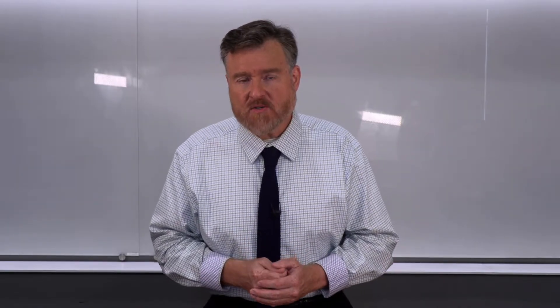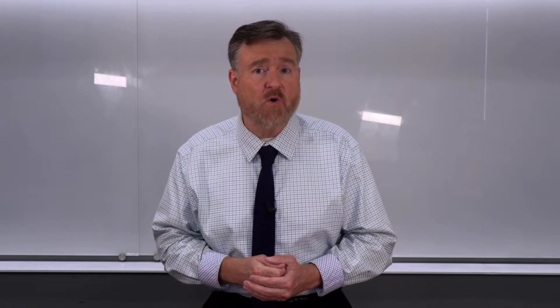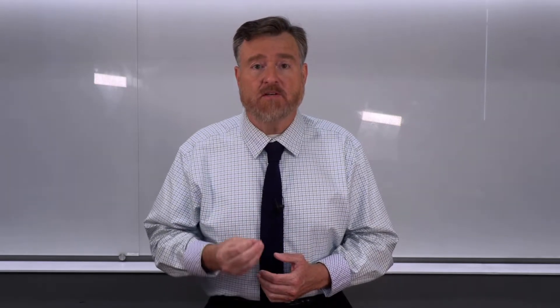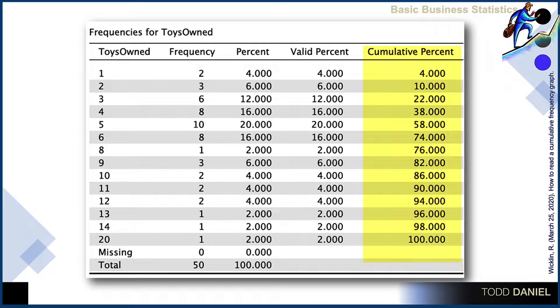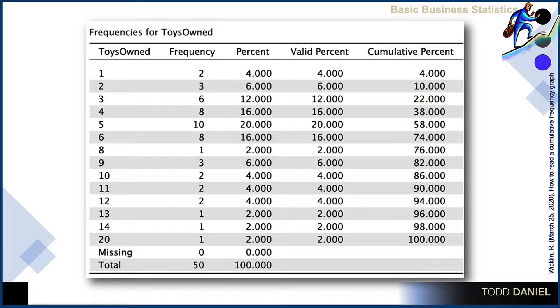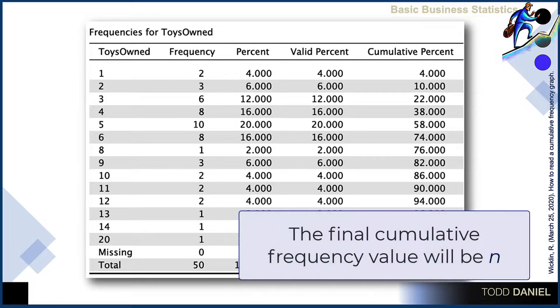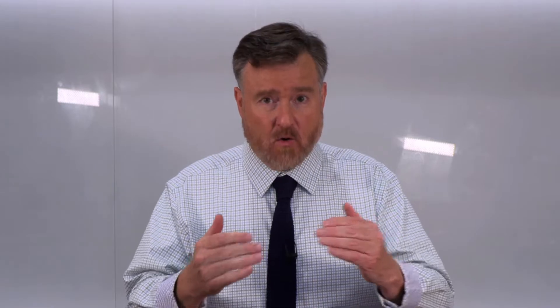Anytime we have a raw score, we can divide that by the total number of scores to create a cumulative percent. The cumulative percent would be 22% of dogs own three or fewer toys. And when you get to the last number in your frequency table, it will always have the same cumulative frequency as your sample size. How many dogs own 20 or fewer toys, with 20 being the highest number in our data set? 100% — all 50 dogs own 20 or fewer toys.